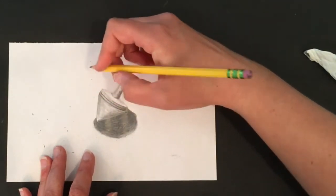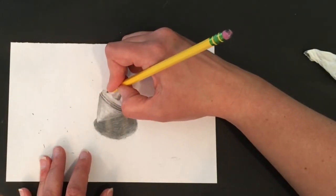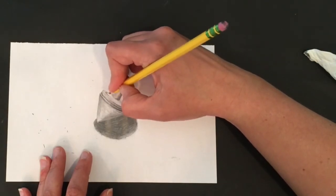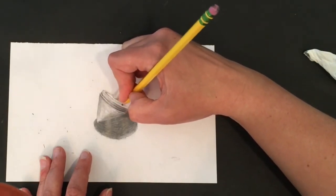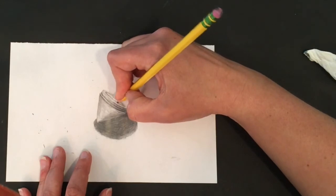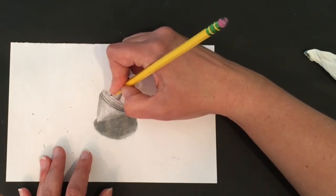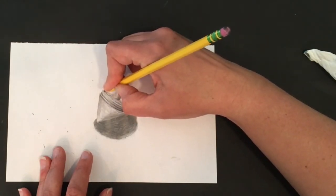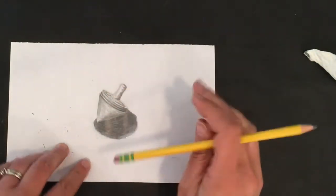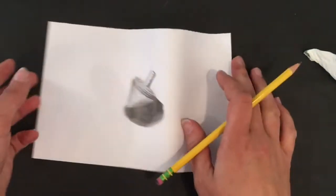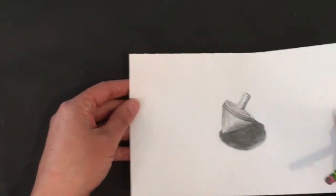Remember the stripes are still going to follow the value of the object though. So the ones that are darker on this underside I'm using heavier pencil pressure. The ones that are lighter on the top and swirl around, I'm using a lighter pressure.